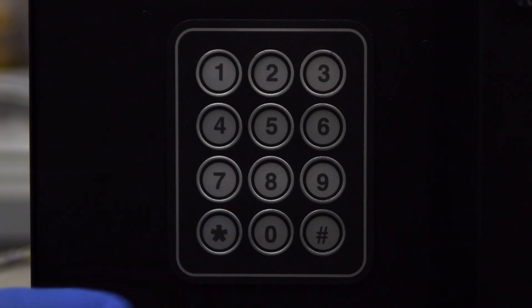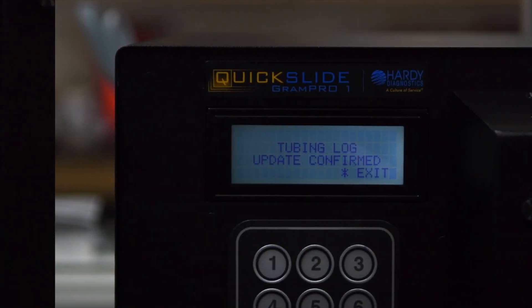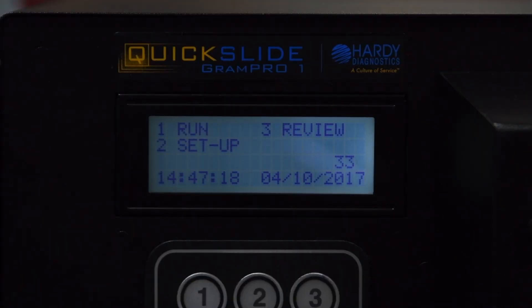Press the star key once. Press 1 to update the tubing log. Press the star key to return to the main menu.